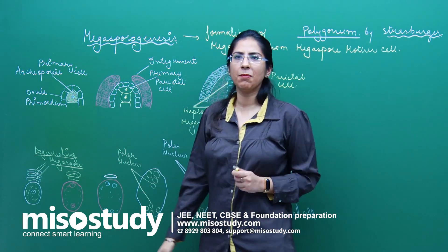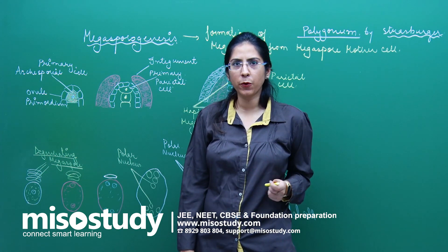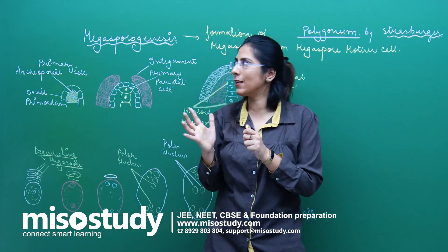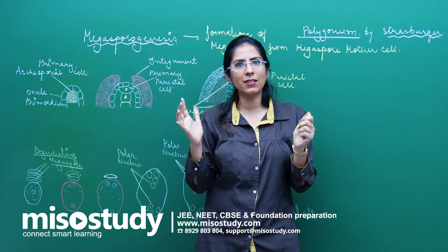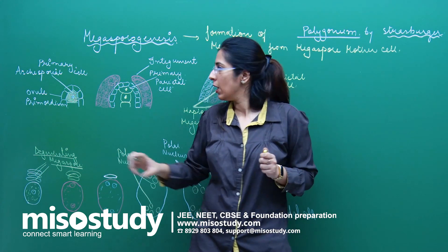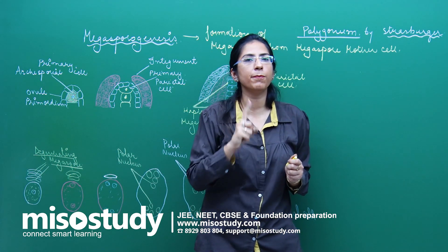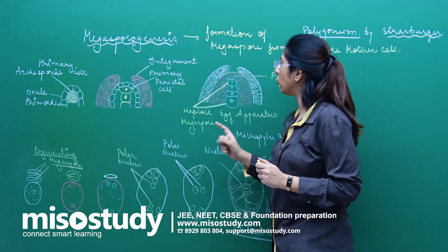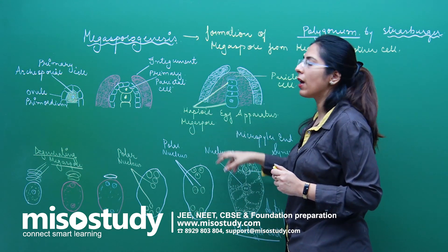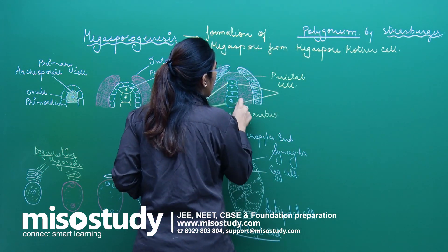We have an end that is termed the Micropylar end. One of the cells acts as the Megaspore mother cell, and this Megaspore mother cell enlarges itself — it has a prominent nucleus and dense cytoplasm. It then starts dividing and undergoes the process of meiosis, resulting in the formation of 4 haploid Megaspores, also termed a Megaspore tetrad.